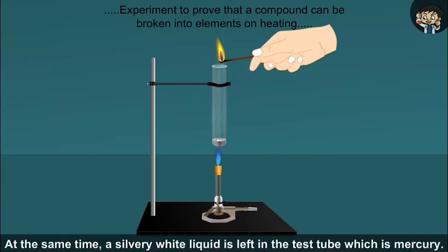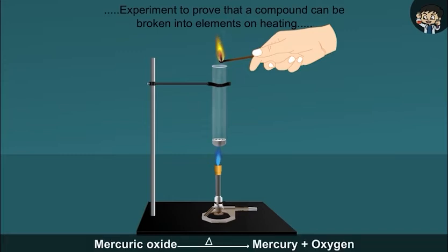At the same time, a silvery white liquid is left in the test tube, which is mercury. Mercuric oxide decomposes to mercury plus oxygen.